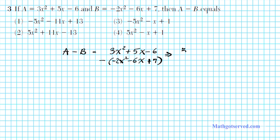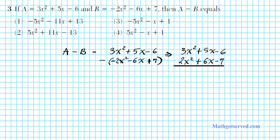A stays the same: 3x squared plus 5x minus 6. And then I have to distribute the minus to all three terms of b, which is negative 2x squared minus 6x plus 7. Minus times minus is positive, so you have positive 2x squared; minus times minus gives plus 6x; and minus times plus gives minus 7. Make sure you distribute the negative to all the terms inside the parentheses.